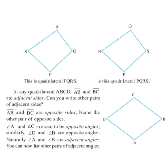A quadrilateral has four angles. Angle A and angle C are opposite angles, and angle D and angle B are opposite angles. One pair of adjacent angles given is angle A and angle B. The other adjacent angle pairs are: angle B and angle C, angle C and angle D, and angle D and angle A.